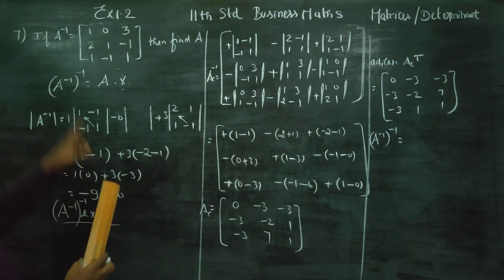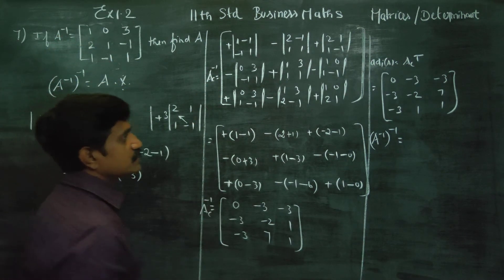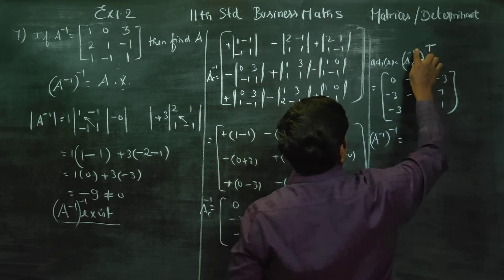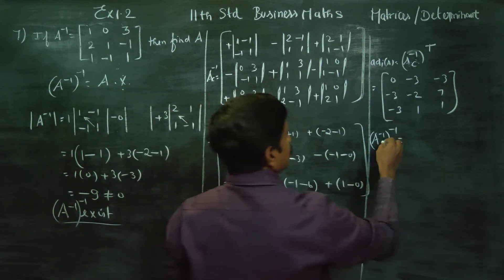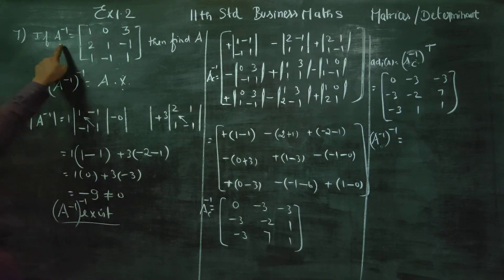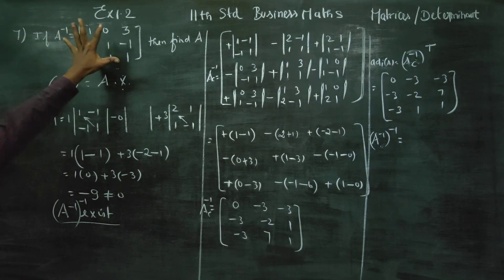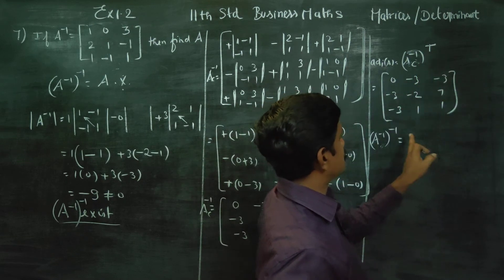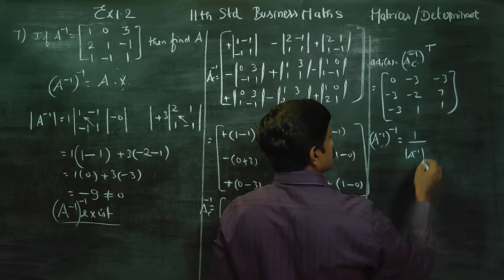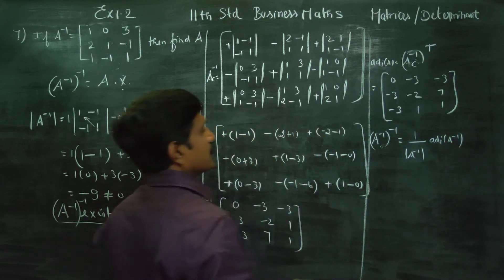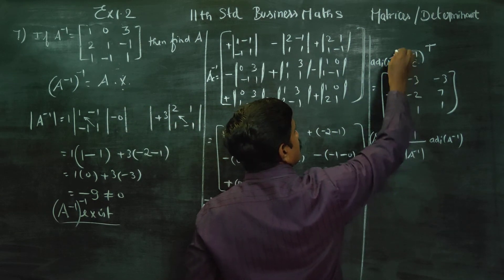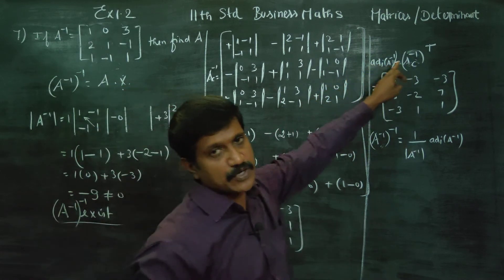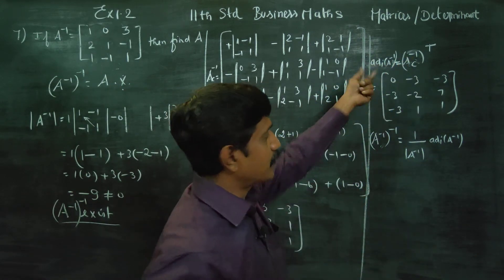Now we take the transpose to get the adjoint. The transpose of the cofactor matrix gives us the adjoint of A inverse. So A inverse is equal to 1 by determinant of A inverse, into the adjoint of A inverse.